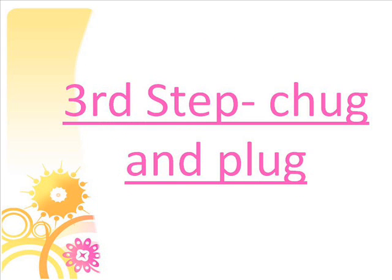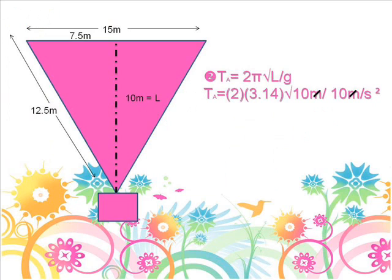Third step: plug and chug. You can see the substitution for pi for 3.14, L for 10 meters, and g for 10 meters per second squared.